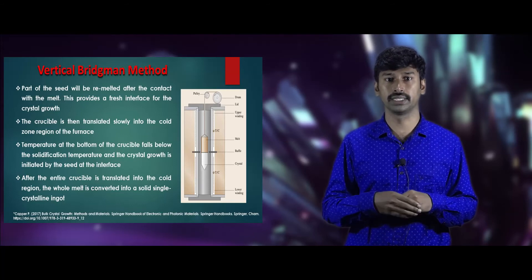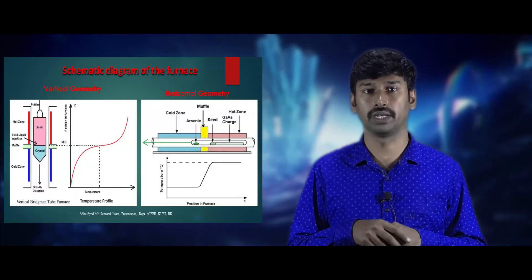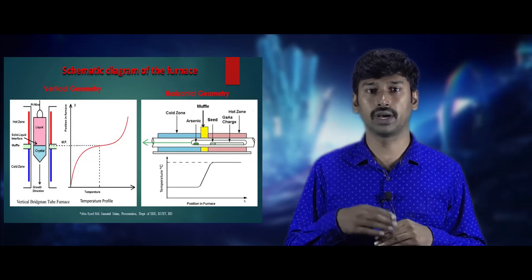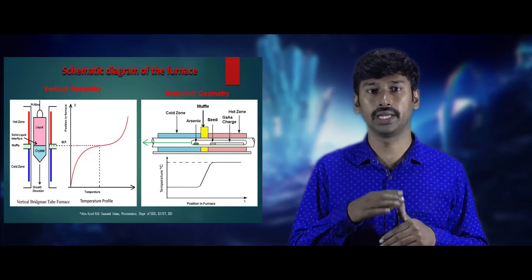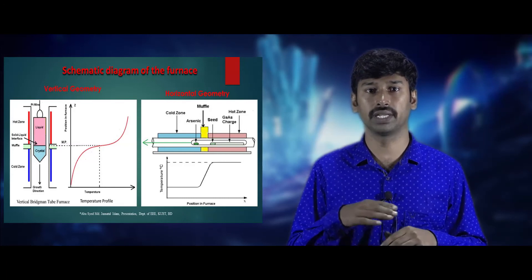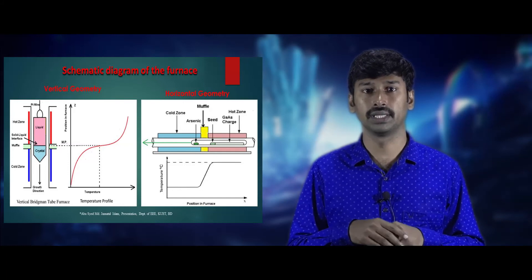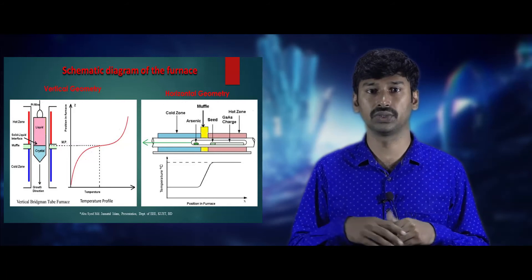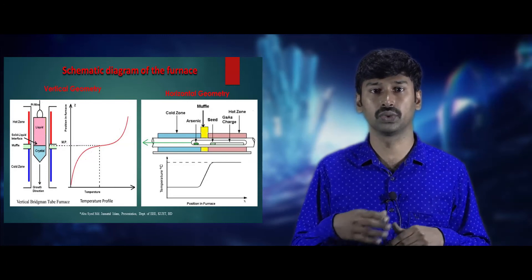The schematic diagram shows the furnace with its temperature profile. In the vertical Bridgman method, the top region is the hot zone and the bottom region is the cold zone, with an adiabatic region in between where crystal growth occurs. In the horizontal Bridgman method, the left side of the furnace is the cold zone and the right side is the hot zone, with an adiabatic region in between where crystal growth takes place. The temperature profile of the furnace is also shown in this figure.